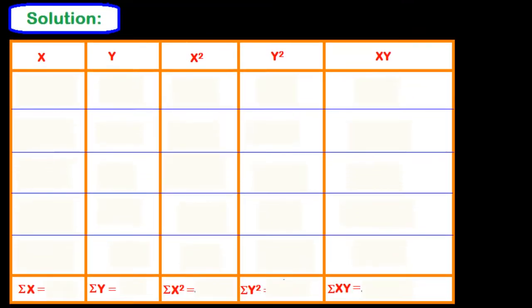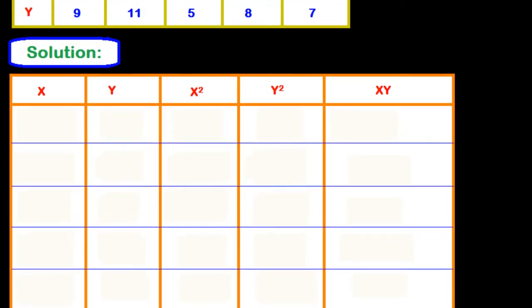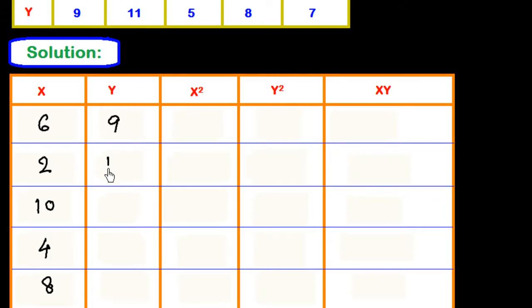We have made five columns and will get the summation of all columns at the bottom. Writing down x: 6, 2, 10, 4, 8. Writing down y: 9, 11, 5, 8, 7.